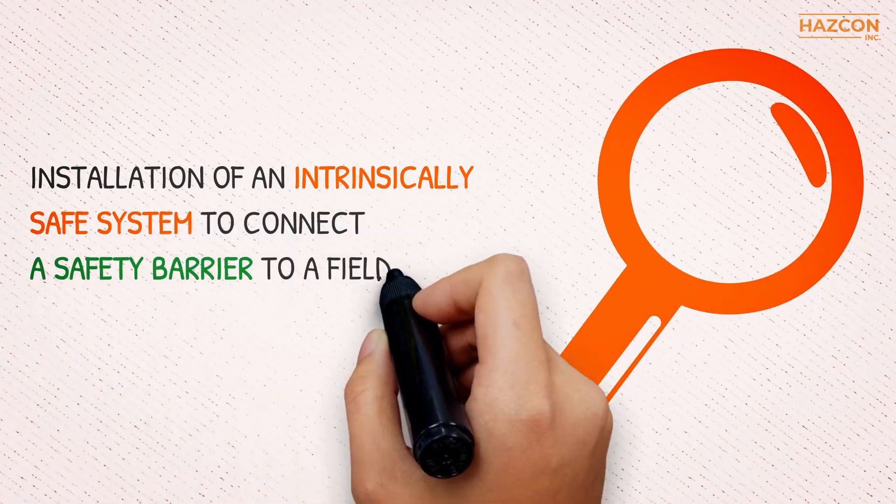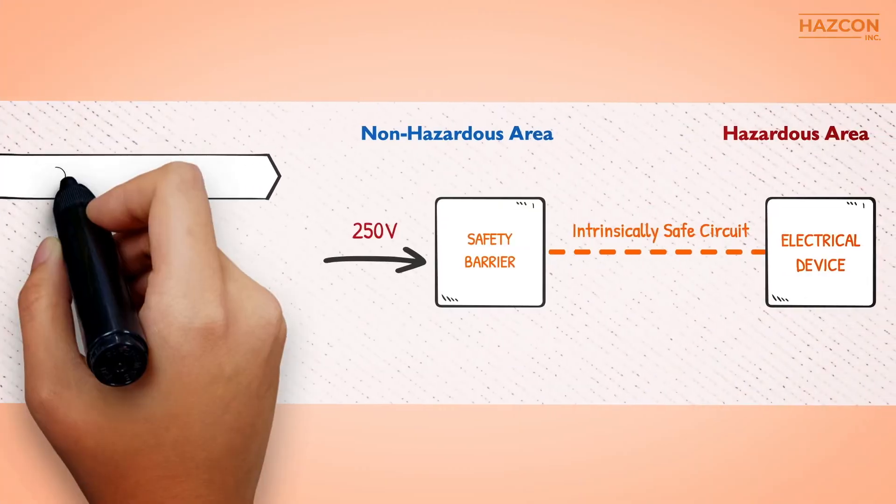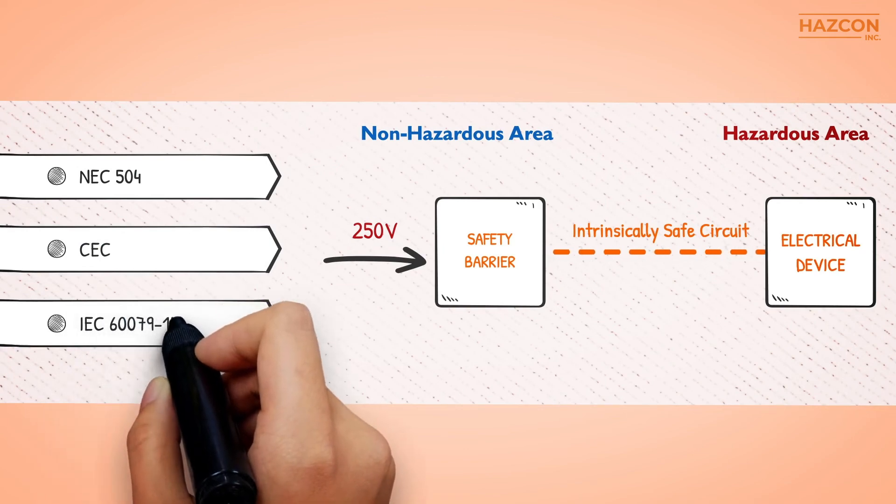Installation of an intrinsically safe system to connect a safety barrier to a field device requires a precise assessment. The code of practice for such installations must be strictly adhered to in order to ensure that the installation is safe.